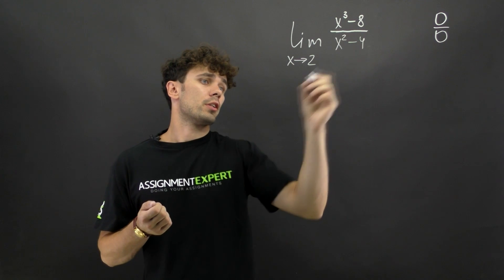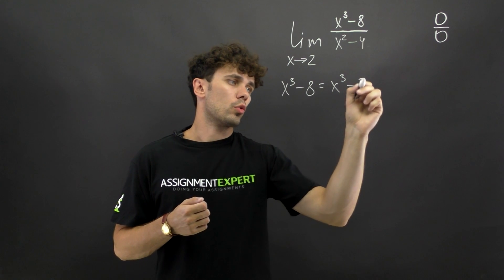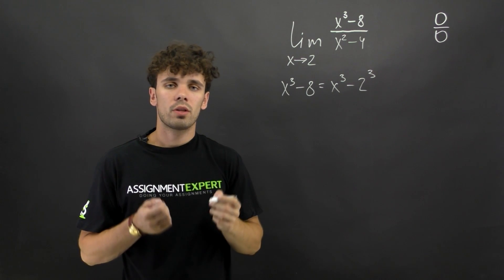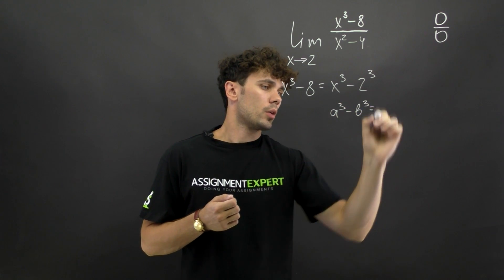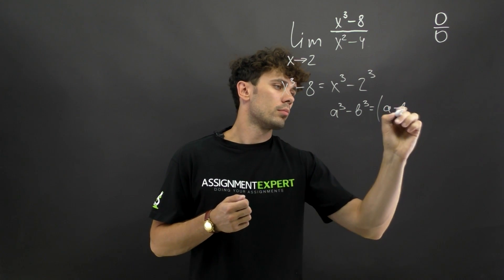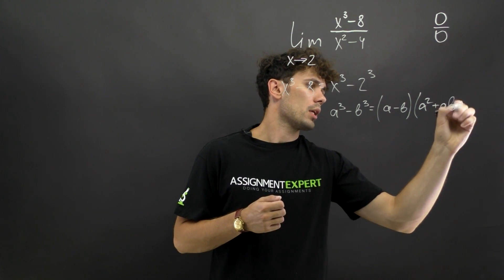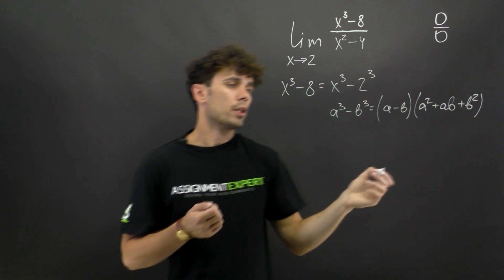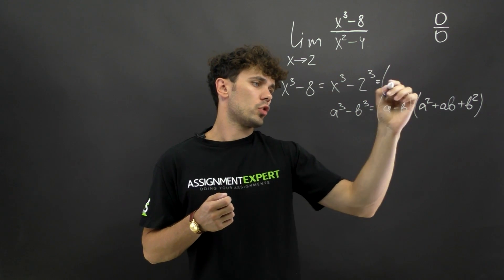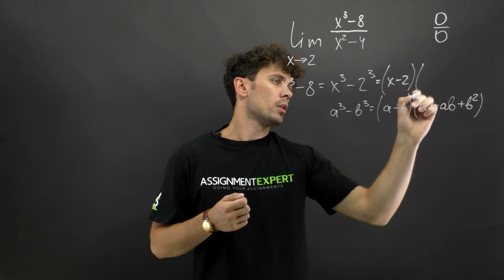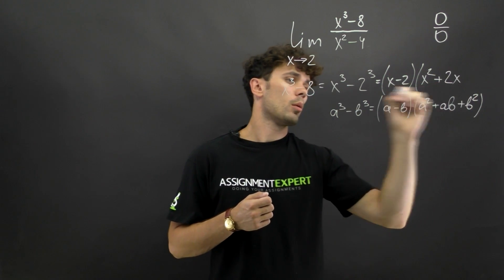Our numerator: x cubed minus 8 equals x cubed minus 2 cubed. This is similar to the difference of cubes formula: a cubed minus b cubed equals a minus b times a squared plus ab plus b squared. In our case x is a and 2 is b, so we get x minus 2 times x squared plus 2x plus 4.